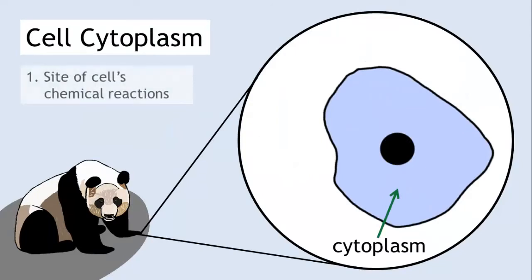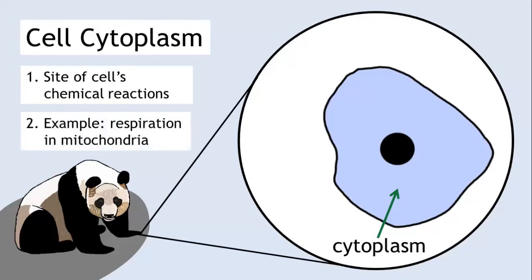The cell cytoplasm is the site of the cell's chemical reactions. Lots of chemical reactions occur here, such as respiration. Respiration takes place in specialized structures called mitochondria.